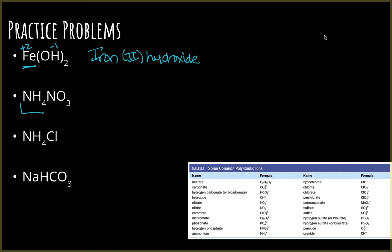This next one has the one positive polyatomic ion. Both parts are going to be named using our chart. The first part, NH4, is called ammonium, and NO3 is nitrate — so that one would be called ammonium nitrate.